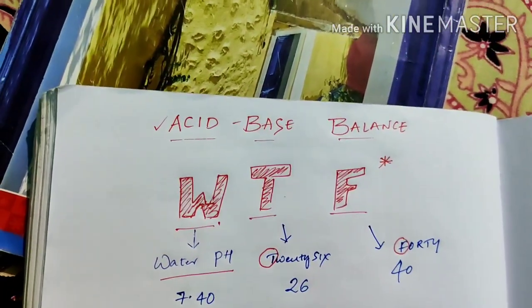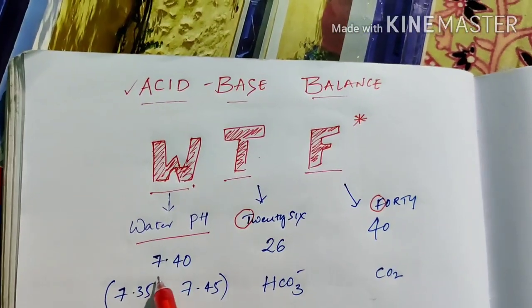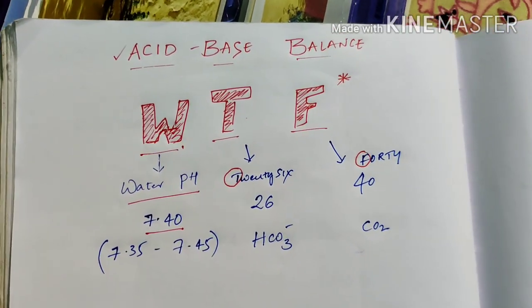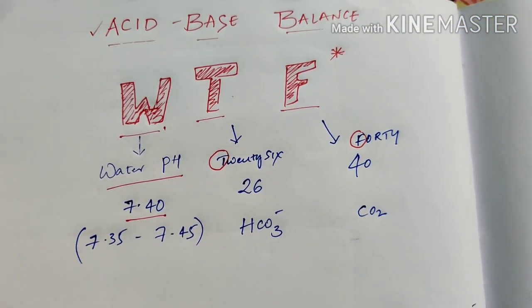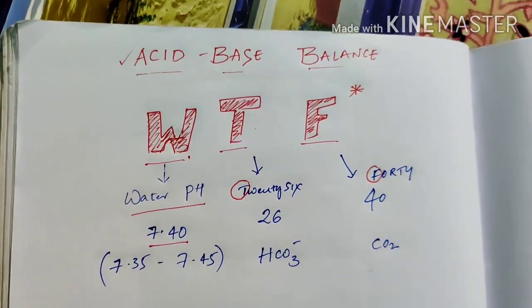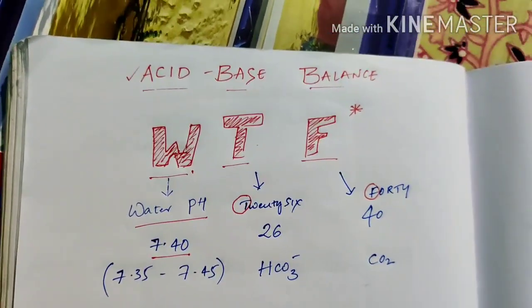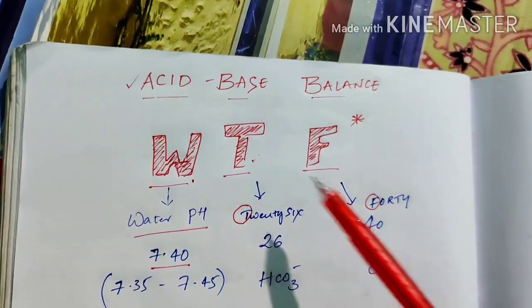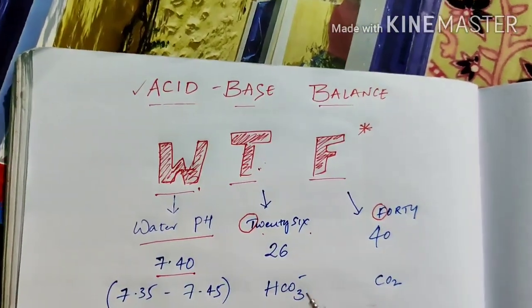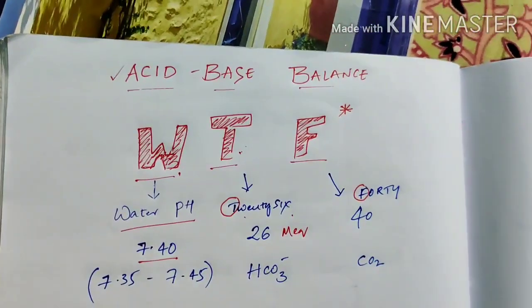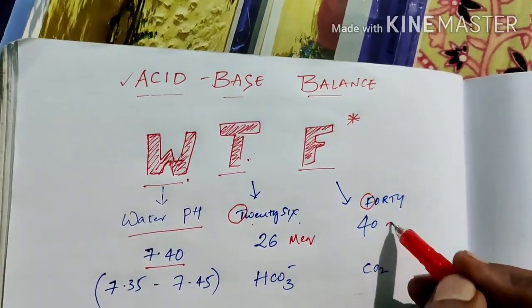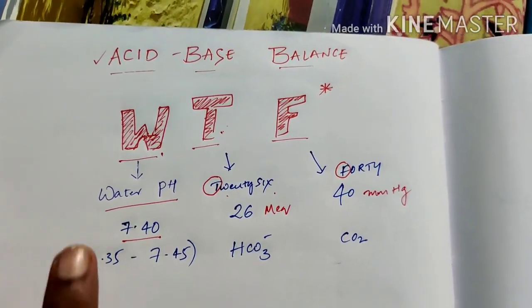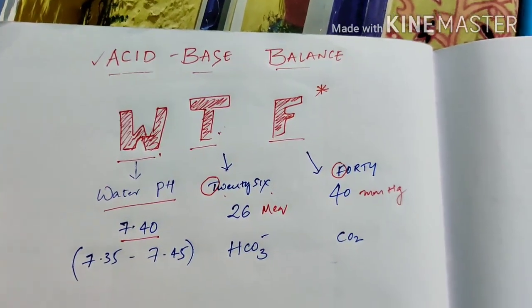W is for water — water pH is 7, but here in the body it has 7.4. T is for 26 — that's HCO3 minus in milliequivalents. F is for 40 — that's 40 mmHg for CO2. So WTF means pH 7.4, HCO3 minus 26, CO2 40. These are the normal values.